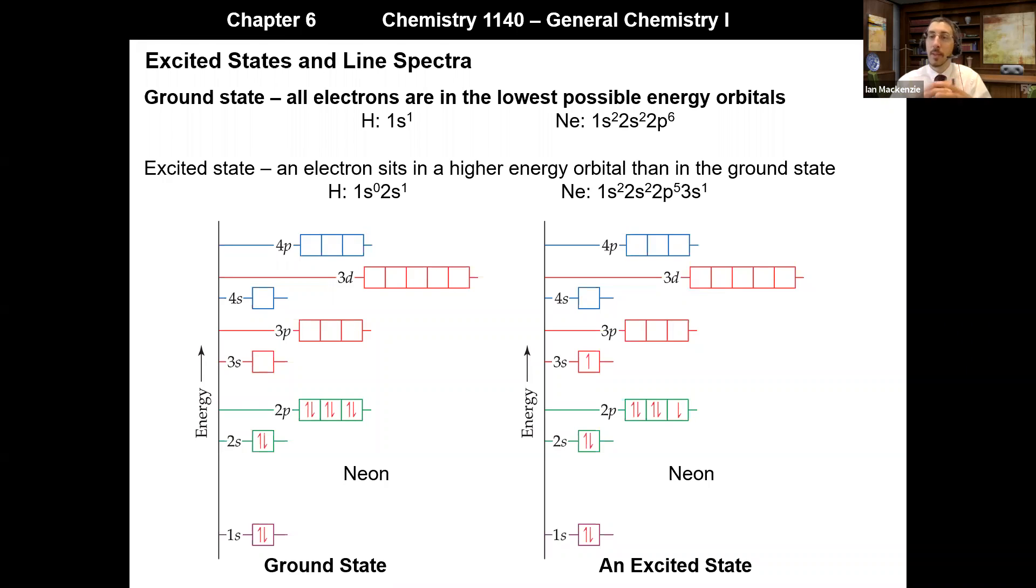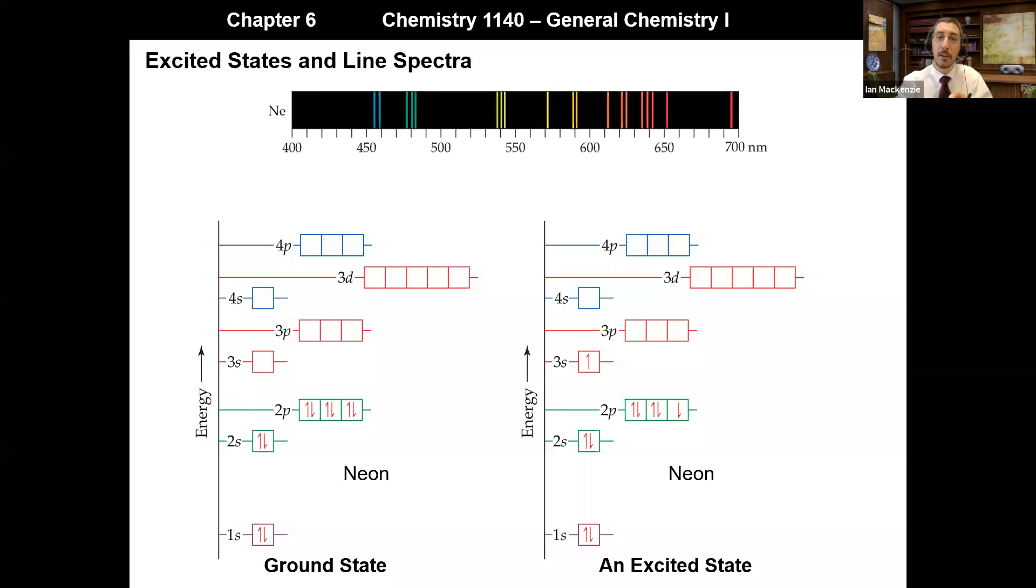Now why am I saying all of this? Well, if we revisit the line spectra, so remember that line spectra results from electrons that got promoted into an excited state, so as in this case here, that electron in the 3s orbital.